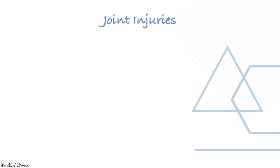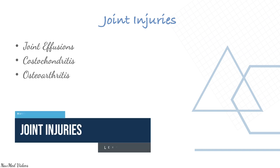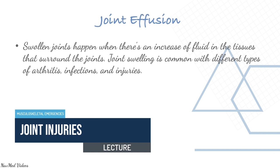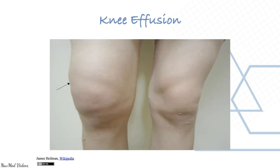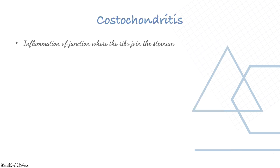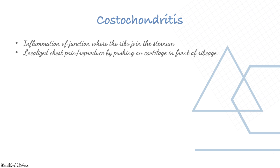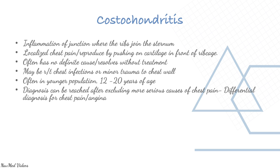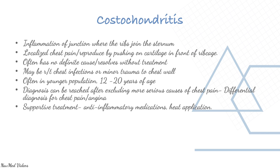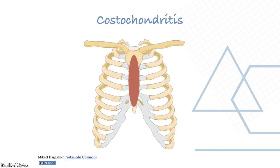Joint injuries include joint effusions, costochondritis, osteoarthritis, septic arthritis, and rheumatoid arthritis. Swollen joints occur when there is an increase of fluid in the tissues surrounding the joints. Costochondritis is inflammation of the junction where ribs join the sternum, causing localized chest pain reproduced by pushing on the cartilage in front of the rib cage. It often has no definitive cause, may be related to chest infections or minor chest trauma, and often resolves without treatment. Diagnosis is reached after excluding more serious causes; supportive treatment includes anti-inflammatory medications and heat.